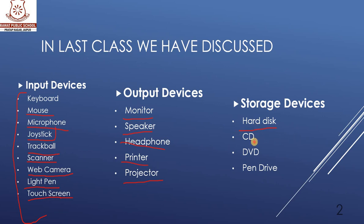The next storage device is CD. A CD is flat and round in shape — the full form of CD is Compact Disc. We can save data in a CD. Then DVD — DVD also looks like a CD, and the full form of DVD is Digital Versatile Disc. We can store more information in a DVD than a CD. Then pen drive — a pen drive is a small portable storage device. It is easy to use and can be carried easily everywhere.